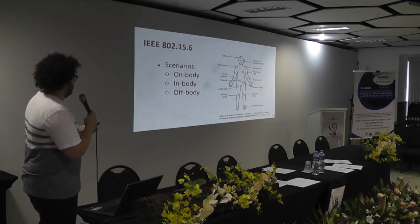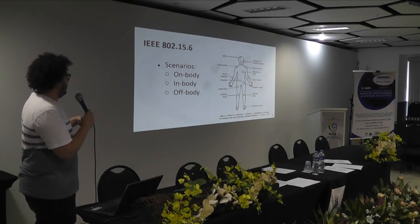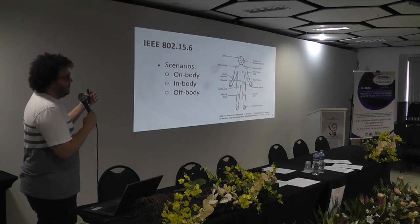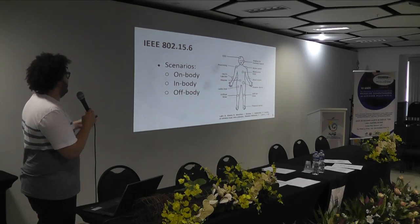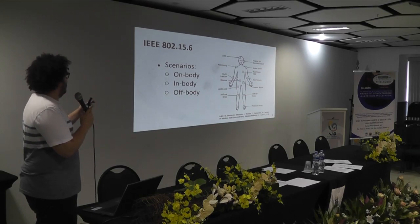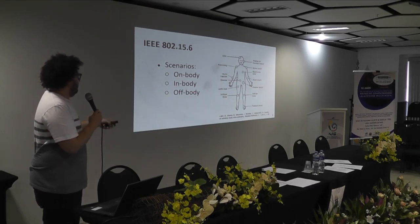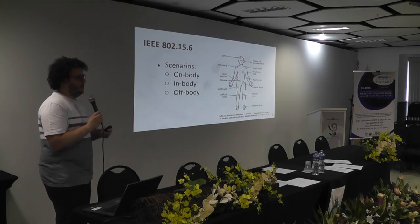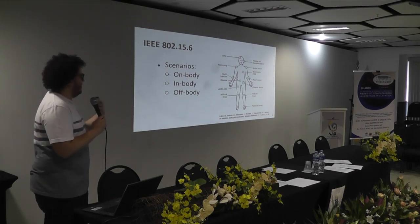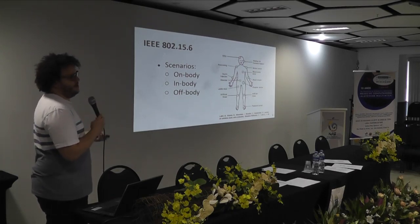Here we can see the most diverse types of devices that can be in the human body: ring-screen injection, blood pump, ECG, EEG, artificial knee — you can have a lot of types of devices in this network, making it a very heterogeneous scenario.